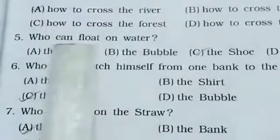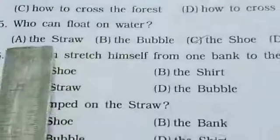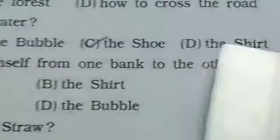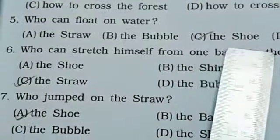5. Who can float on water? A. The straw, B. The bubble, C. The shoe, D. The shirt. Correct answer, C, the shoe.